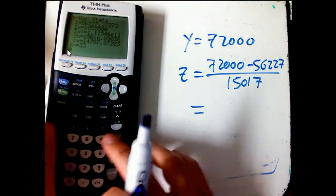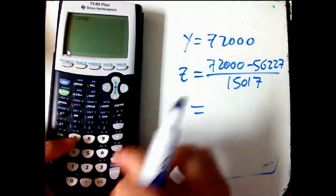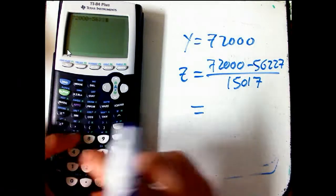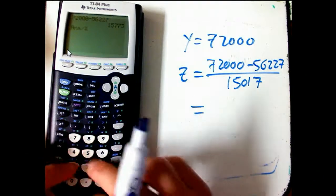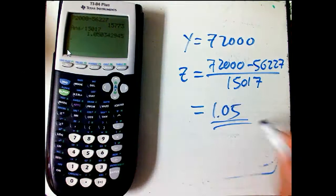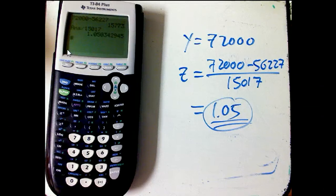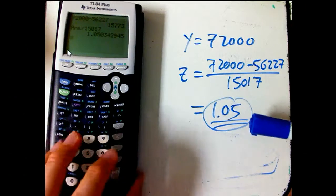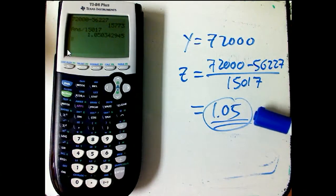So let's do that. $72,000 minus 56,227. Oh, I forgot the parentheses, so I'll just divide it now. Divide it by 15,017. Z-score 1.05. So we're about one, that salary will be about one standard deviation above the mean. That, for almost any kind of histogram, almost any kind of data, that's significantly above the mean, but not surprisingly above the mean.